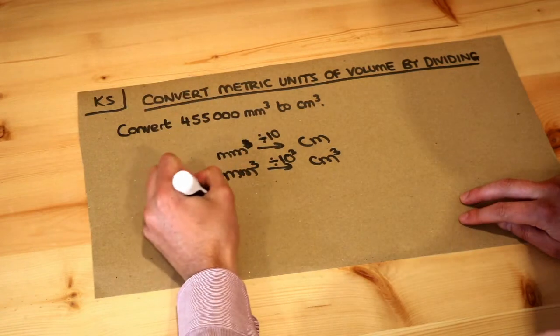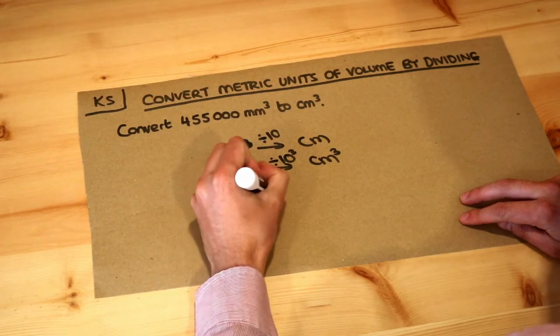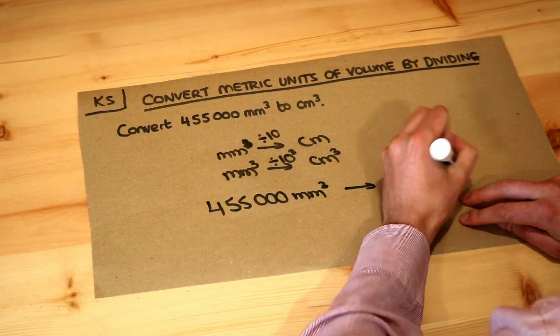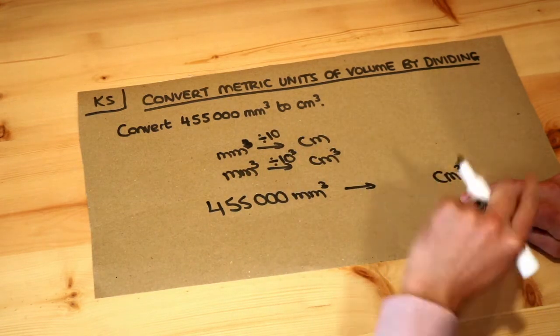Let's apply that to this. We have 455,000 millimeters cubed and we're going to centimeters cubed. To go from millimeters to centimeters, we divide by 10.